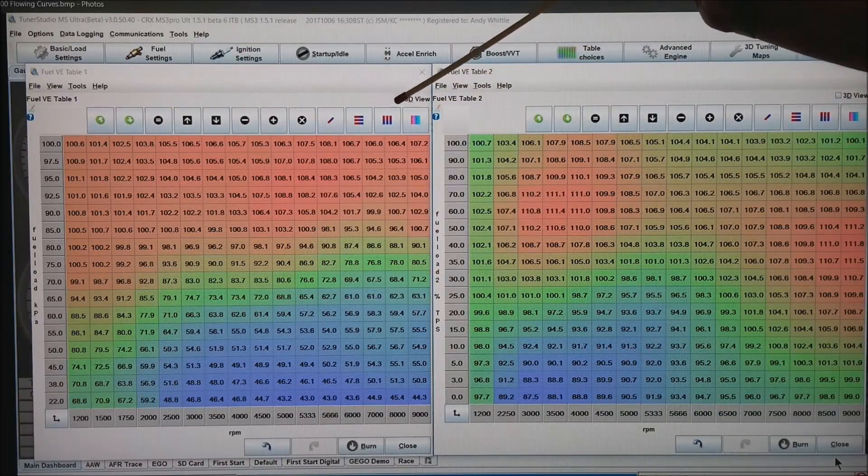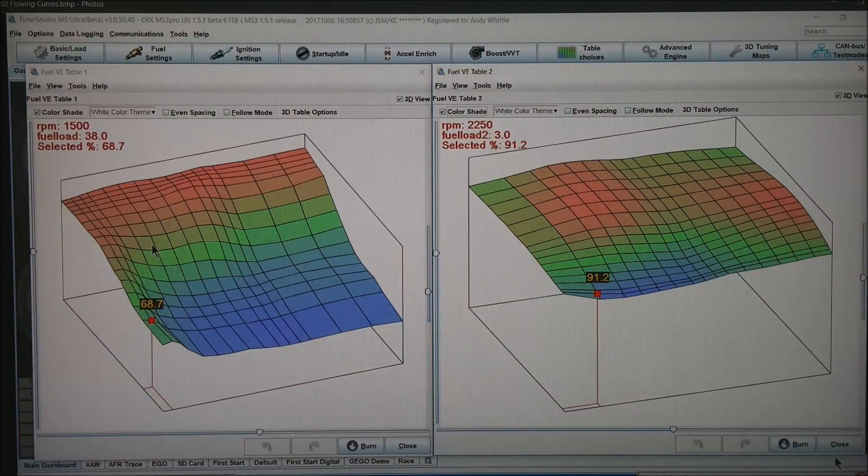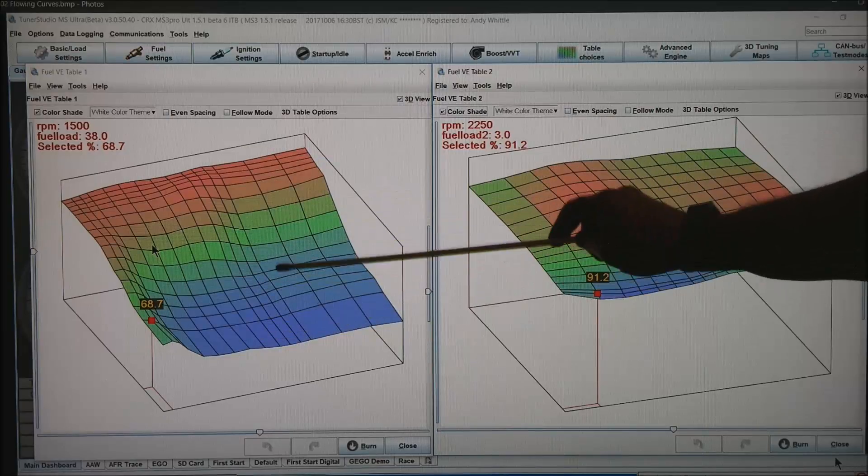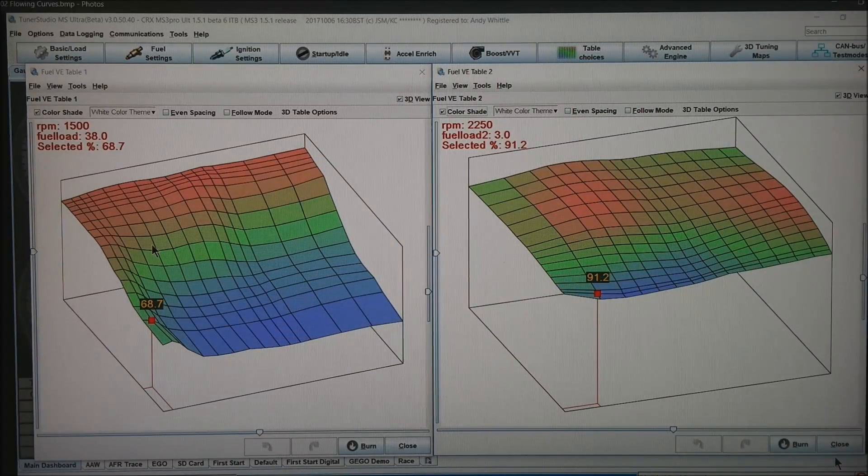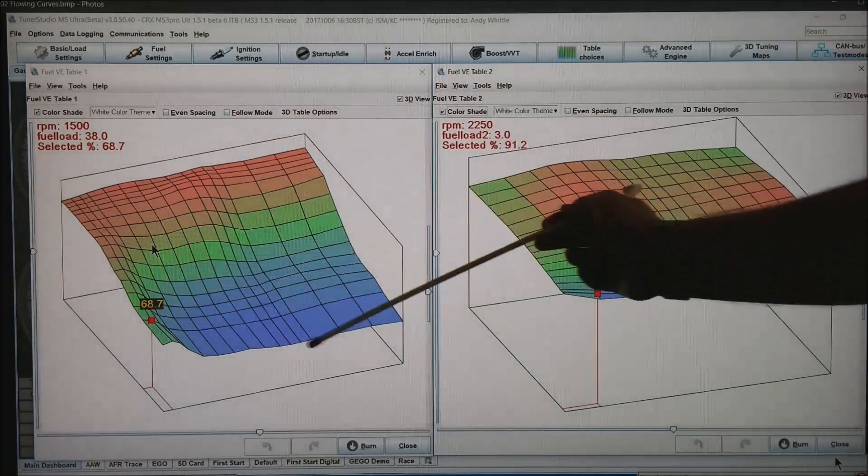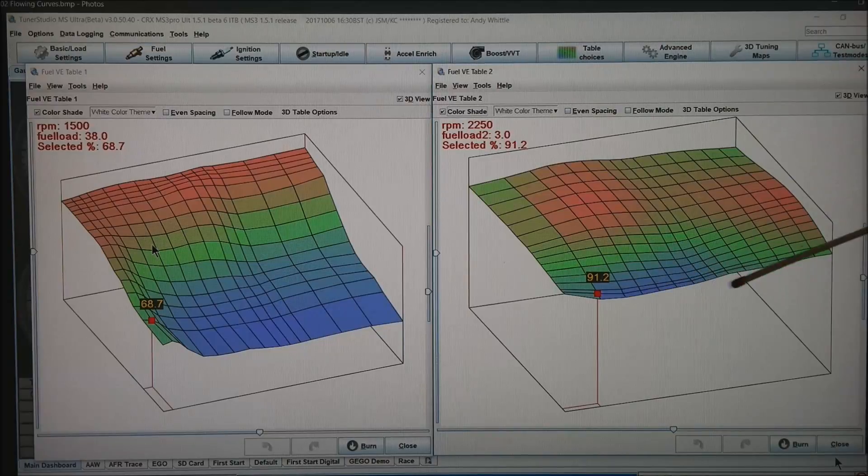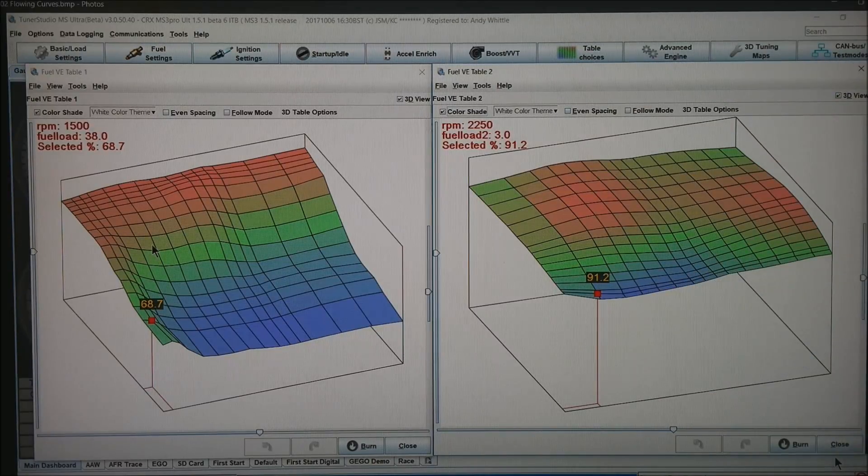The easiest way to see that is tag this 3D view. And what you get is views that look something like this. If we're getting big spikes or valleys anywhere, we probably have a tuning issue. Our goal is to have a nice smooth speed density table and also a nice smooth alpha end table as a correction.